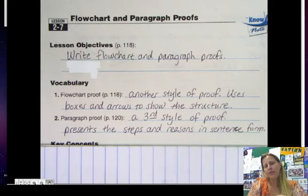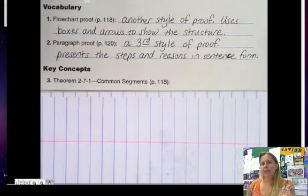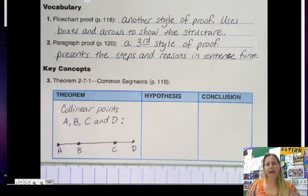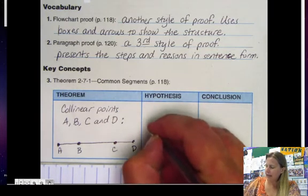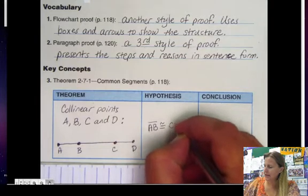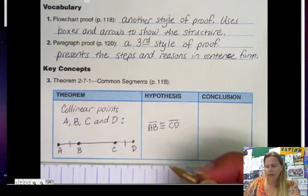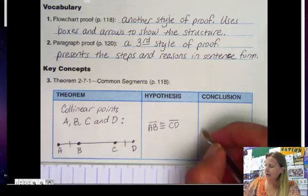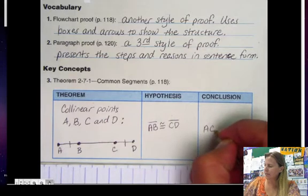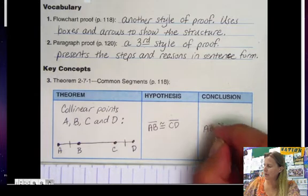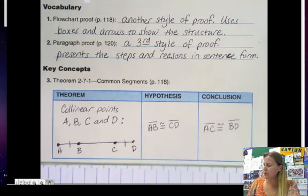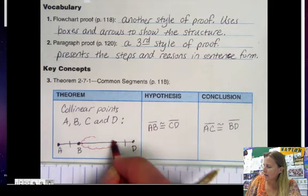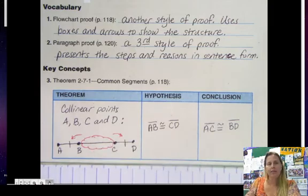Before we start writing these proofs, there are a few last theorems I want to show you from this section. First, the common segments theorem. It has four points set up in collinear form. If we are given that AB is congruent to CD, then if we add the middle segment, AC should also be congruent to BD. We're just adding this middle segment on to the two segments on the outside.